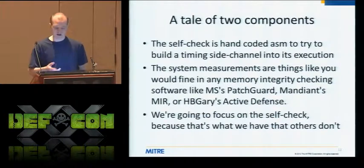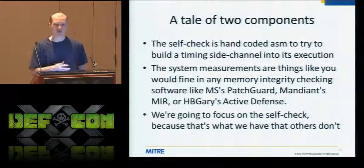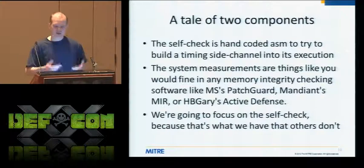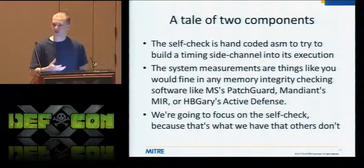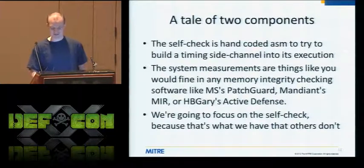You can take Patch Guard, Mirror, Active Defense, any of those — if you're targeting them specifically, you can make them lie. They don't care about that because they say, 'In some future world where the attacker cares enough to target us, then we're winning. But until we see that, we don't care.' Of course you're not going to see it because they're making you lie — so why would you see it?